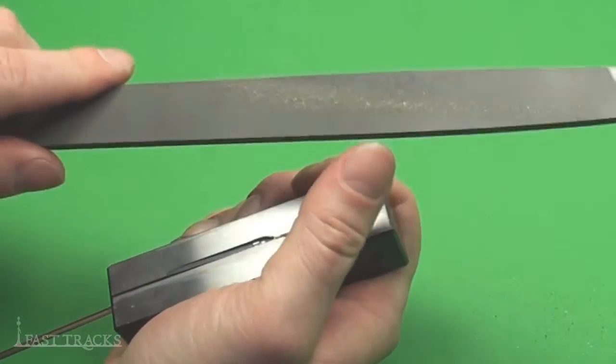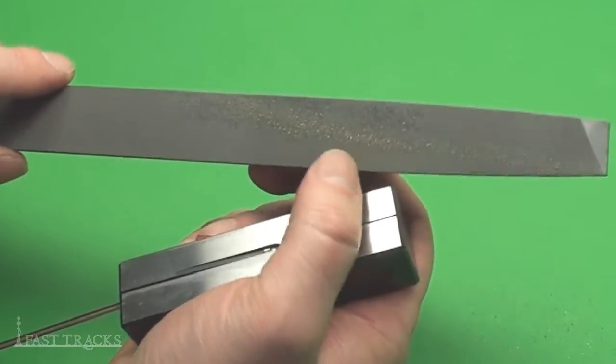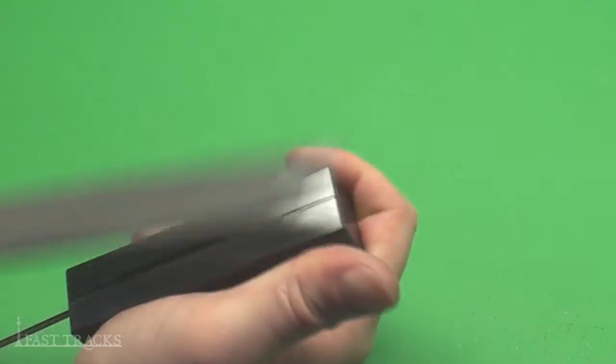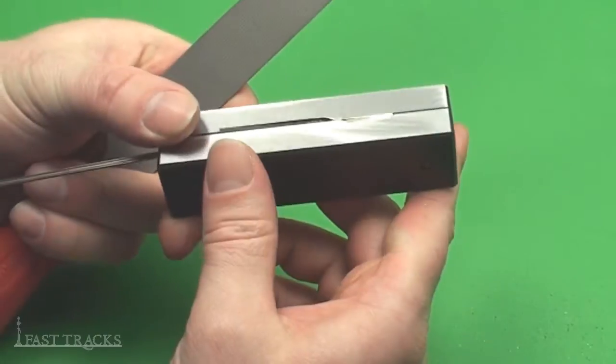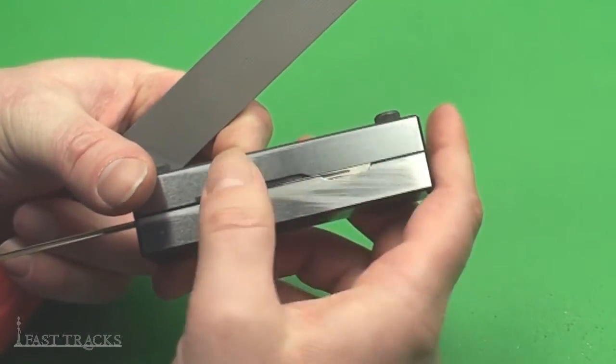You notice I flipped the file over there too as I was filing. As one side starts to get clogged up a little bit, it's best to flip it over until I can clean it out. So that way it still remains sharp. And I've filed that off now. You can see where there's nothing sticking up anymore. It's nice and smooth along the edge of the tool.